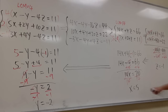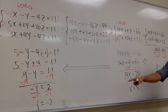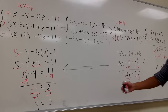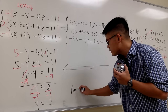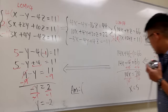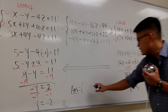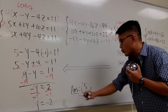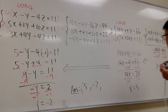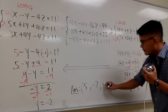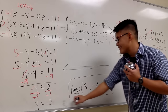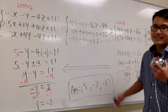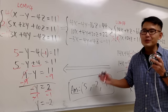And as you can see, we have the x, y, and z values. Let me write down the answer: x is 5, y is negative 2, and z is negative 1. And that's how you solve this system of equations.